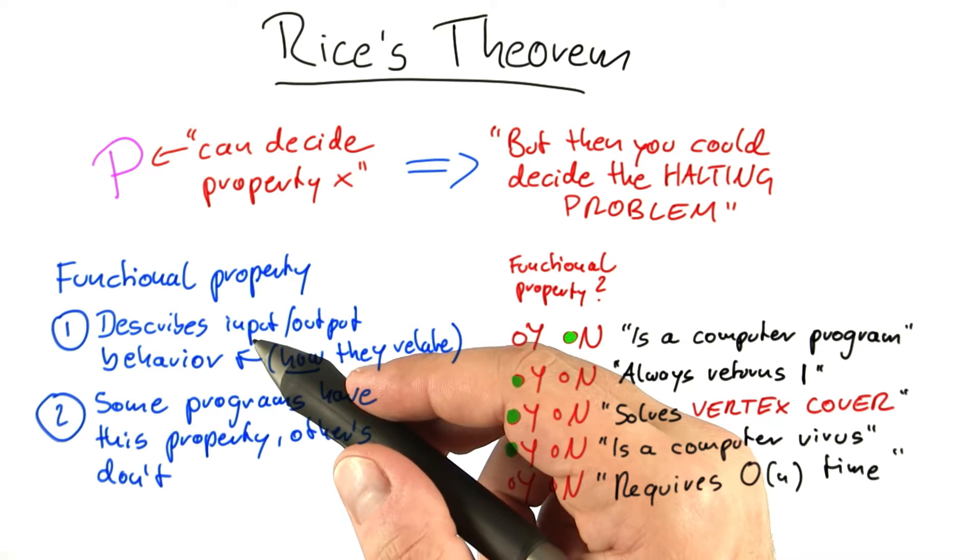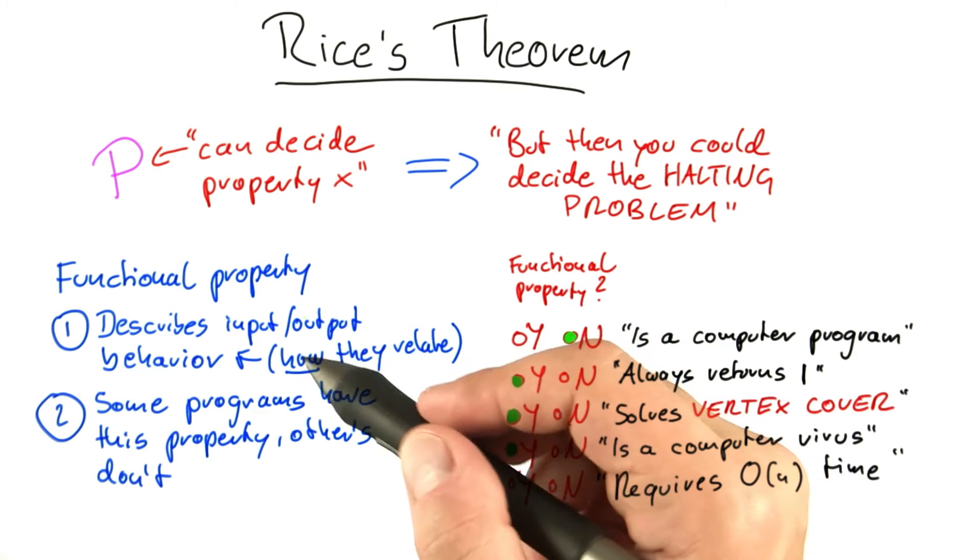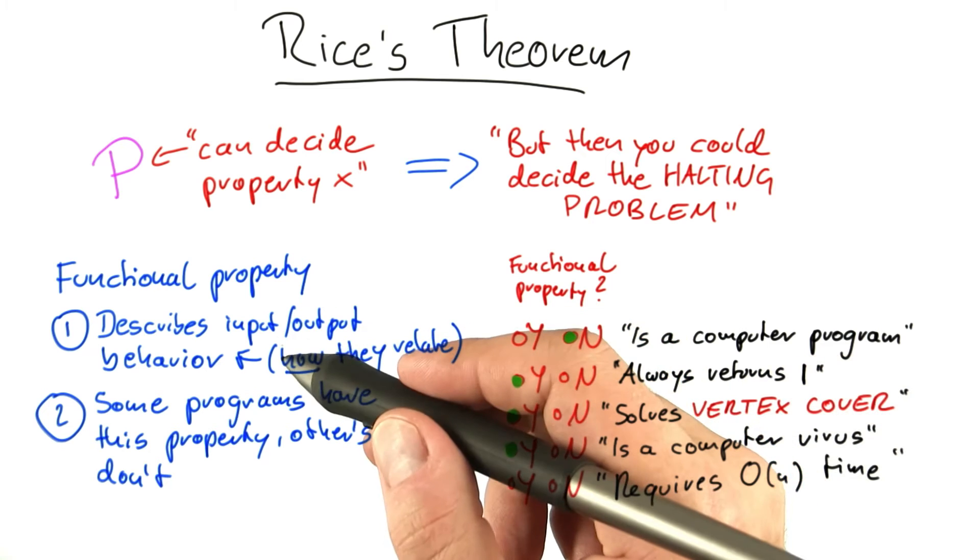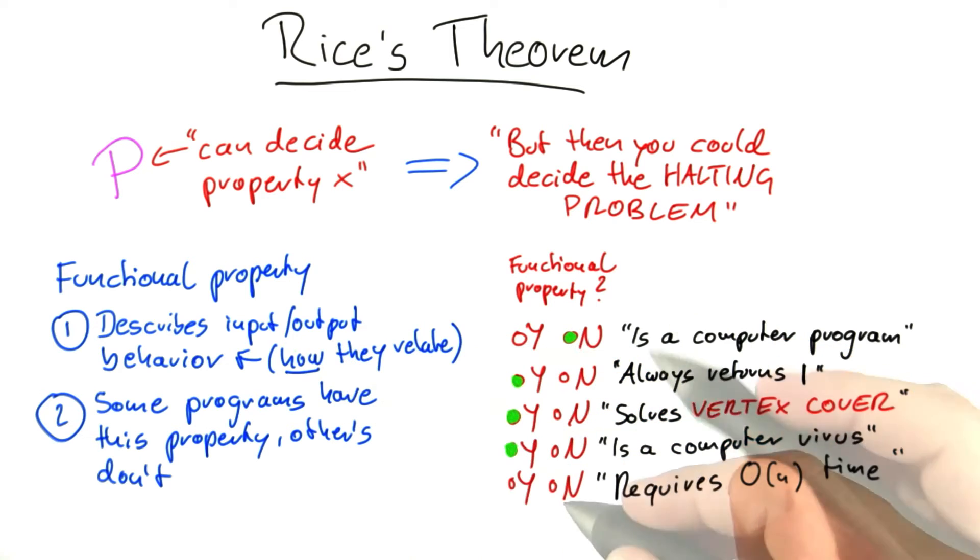It might ignore anything that it receives and overwrite your hard disk, put something in the memory, or it might lock your screen. So the input-output behavior is variable depending on how you define computer virus, but it is always defined.